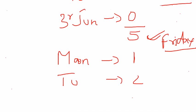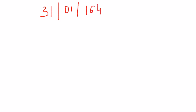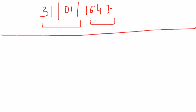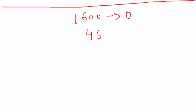Now let's take one more example. Suppose the date is 31st January 1647 and we have to find the corresponding day. Coming back to our trick, we divide into parts: the day and month part, and the year part. Starting with the year part, we'll break it further.